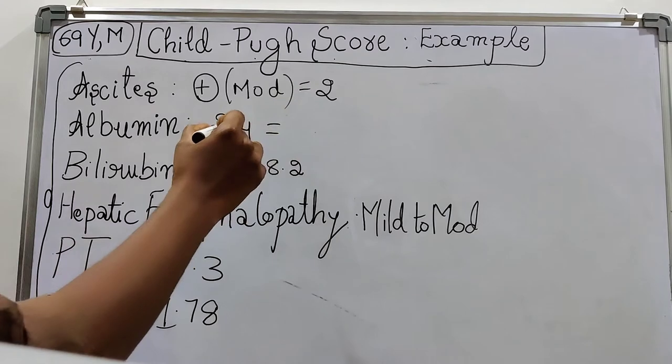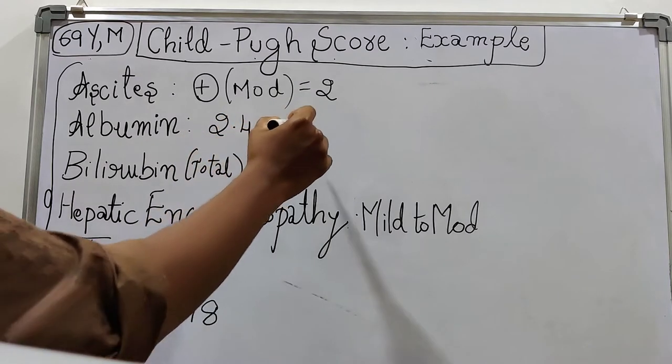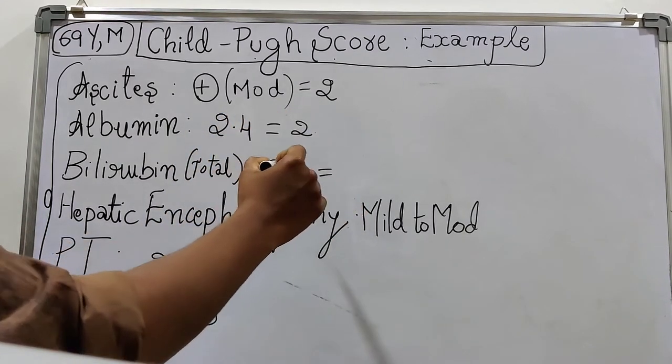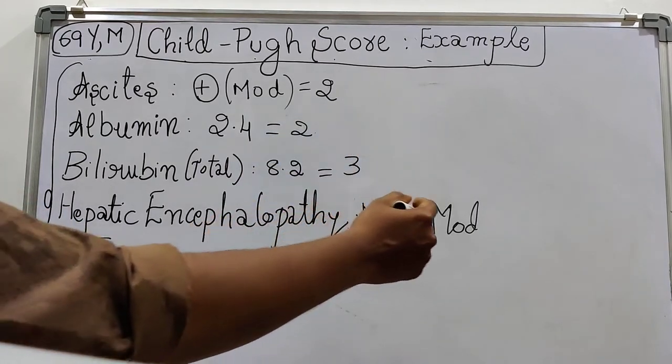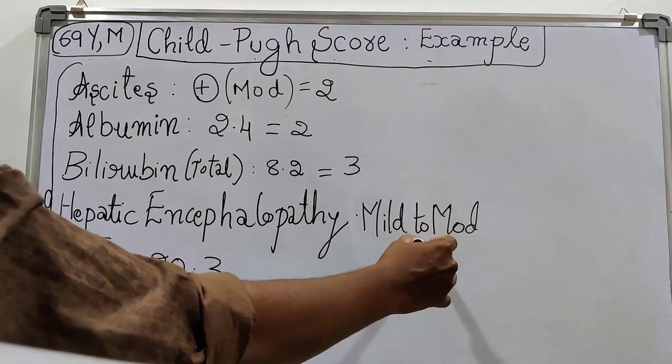Albumin is 2.4, so score assigned will be 2. Bilirubin is 8.2, so score assigned will be 3. Hepatic encephalopathy is mild to moderate, score assigned will be 2.